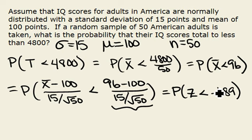We have this set up in less than, and that is what our table gives us. So we will go look for negative 1.89 in our normal table.